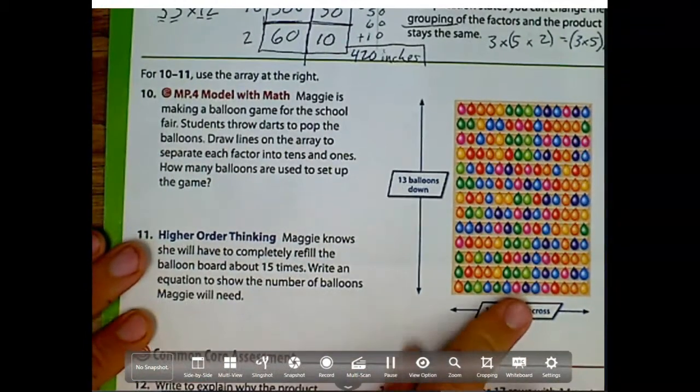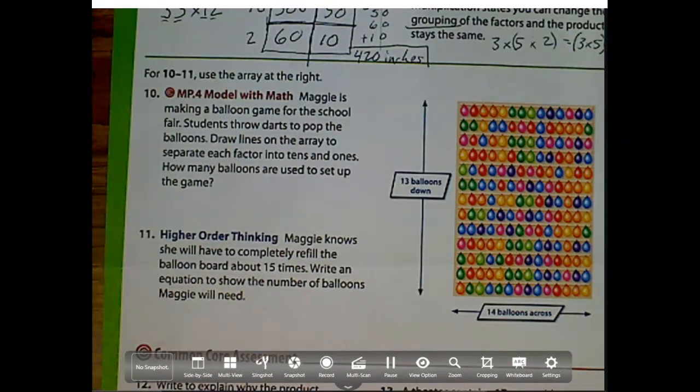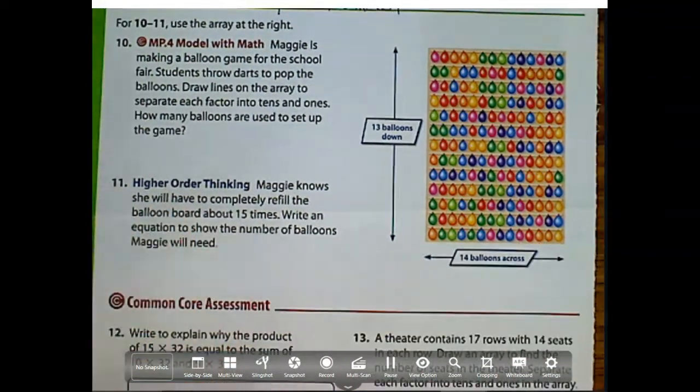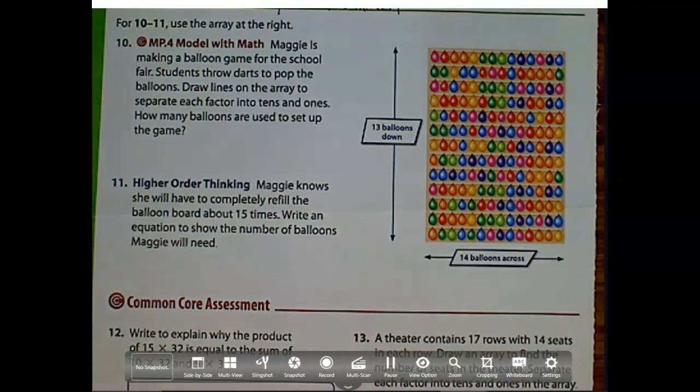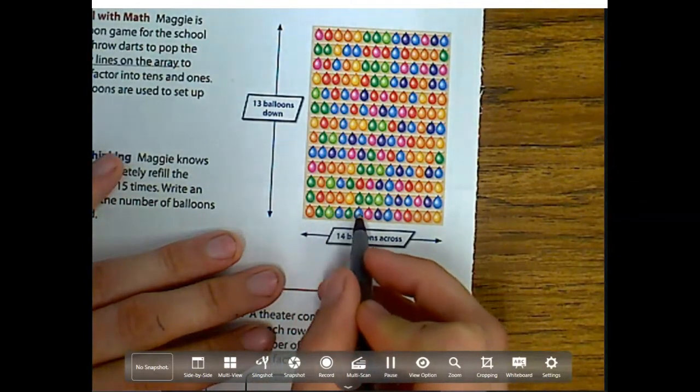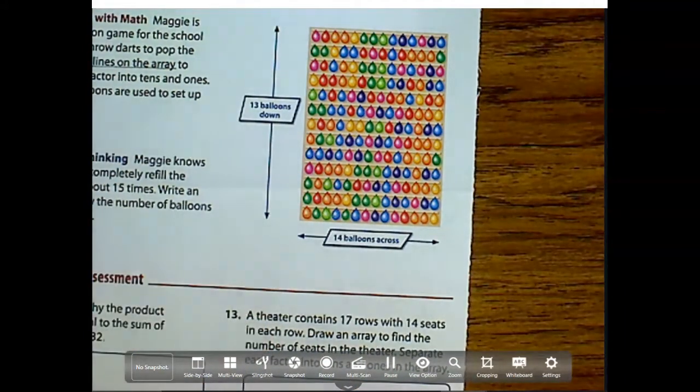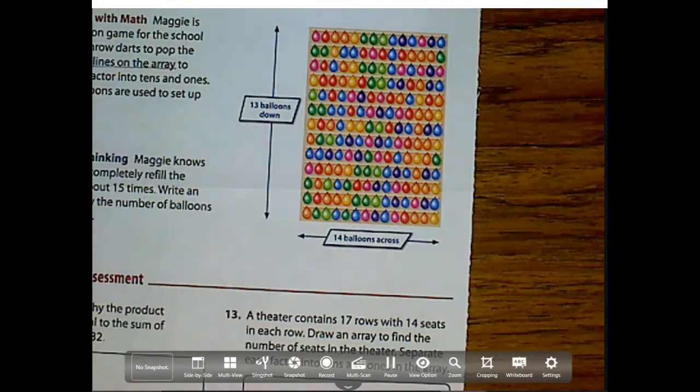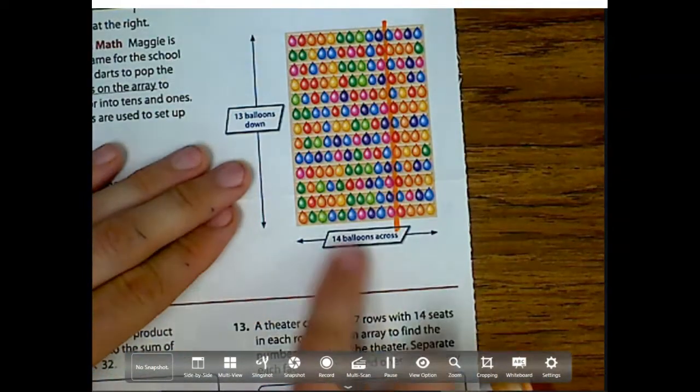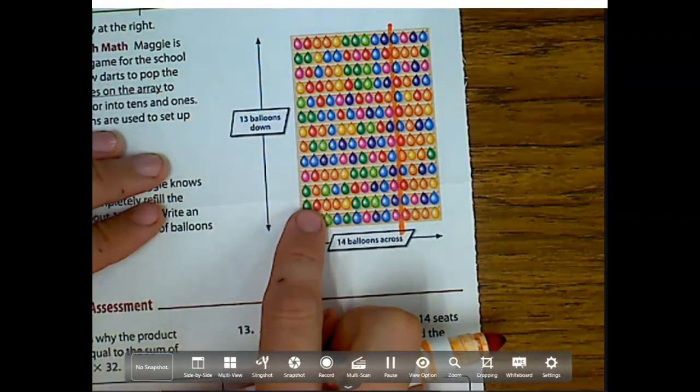Now for number 10, we're going to use this wonderful balloon popping diagram over here. Maggie is making a balloon game for the school fair. Students throw darts to pop the balloons. Draw lines on the array to separate each factor into 10s and 1s. How many balloons are used to set up the game? Well here, we have 13 down and 14 across, and that looks like an array to me already. So it looks like it's 10 times 13. I'm sorry, 13 times 14. But it's actually not supposed to be that, it's saying draw lines to separate. So I need to draw and separate in 10. 1, 2, 3, 4, 5, 6, 7, 8, 10. So I'm going to use, let's see, where's the good color marker? I guess we're using orange today. So I'm going to break this up into a beautiful 10.